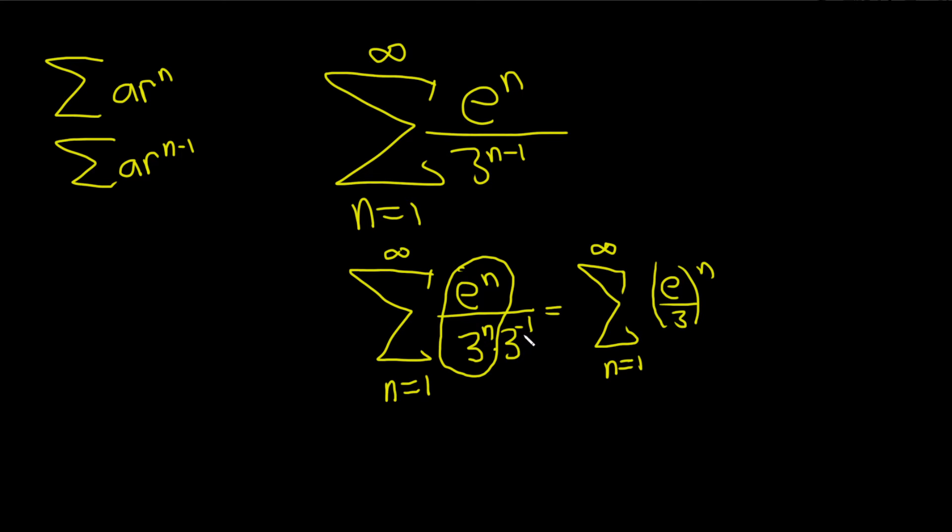Now it's totally geometric, right? You see a is 3 and you can easily identify r. R is e over 3, it's the number that's being raised to a power.